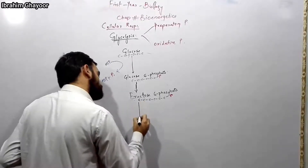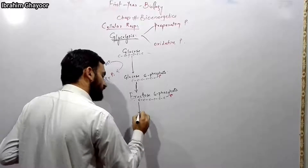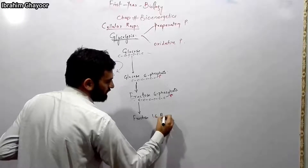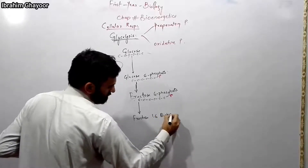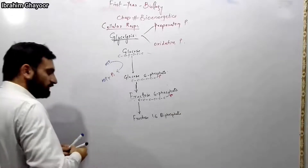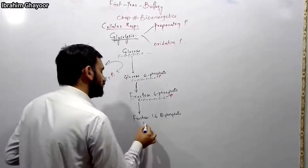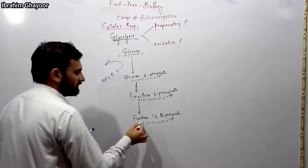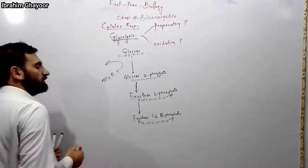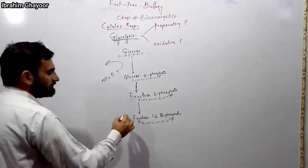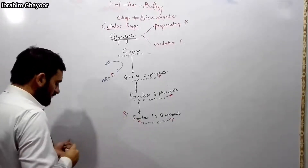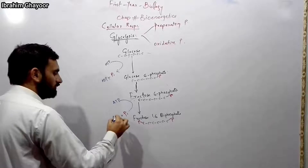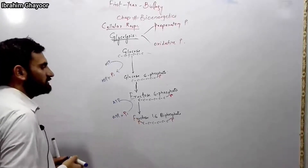Fructose-6-phosphate undergoes phosphorylation and is converted into fructose-1,6-bisphosphate — a diphosphate compound. A phosphate is already present at one position, and another phosphate is added using ATP. ATP breaks down to ADP, releasing inorganic phosphate which attaches to fructose-6-phosphate.